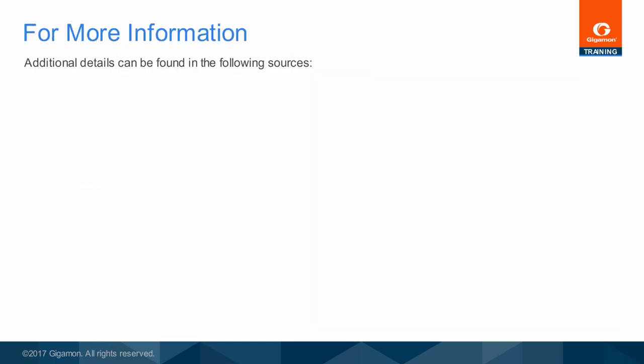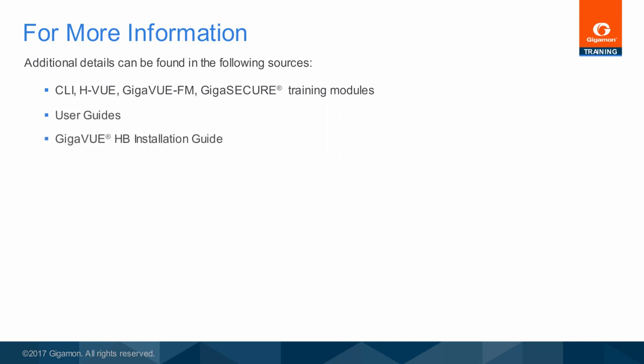Additional details can be found in the CLI, HVUE, Gigaview FM, and GigaSecure Training Modules, User Guides, the Gigaview HB Series Installation Guide, and Product Data Sheets.